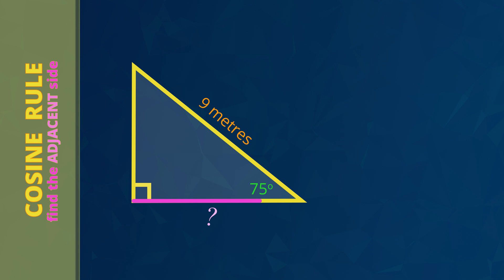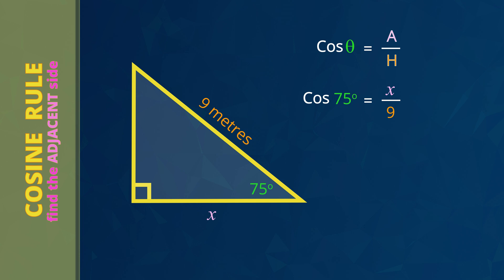Let's see another example to find the adjacent side, which we mark with an X. In this example we will also let the calculator do a bit more work to save time. The two things we already know are the size of the angle of 75 degrees and the length of this hypotenuse of 9 meters. The first step is to write the cos rule: cos theta equals the adjacent side divided by the hypotenuse. Next, substitute the numbers. Angle theta is 75 degrees. The adjacent side is X because that's what we're trying to find. The hypotenuse is 9 meters. Cos 75 equals X divided by 9.